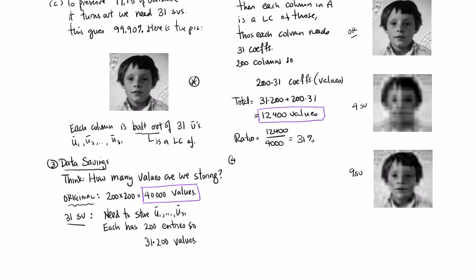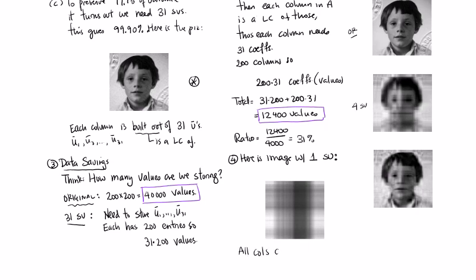Now, just as a final fun note, here's the image with one singular value. So what you see is it's sort of an interesting quilted pattern. So this is because everything is a multiple. Every column is a multiple of every other column. They're all multiples of U1, so all columns are multiples of U1 only.